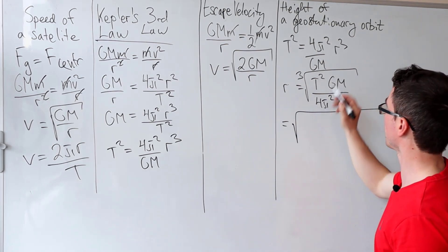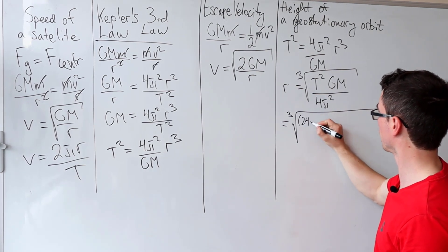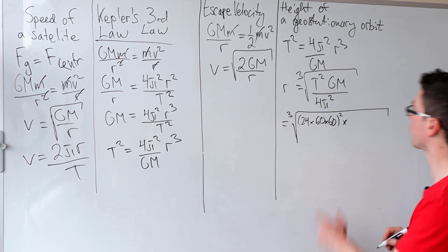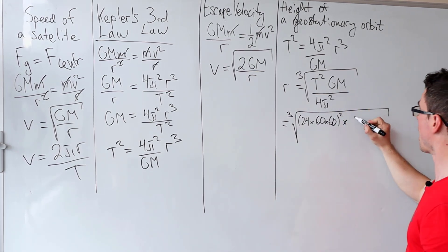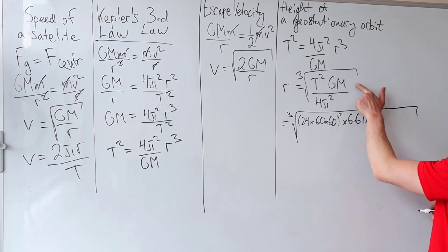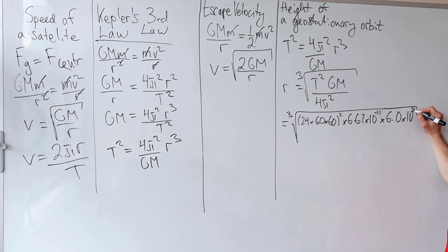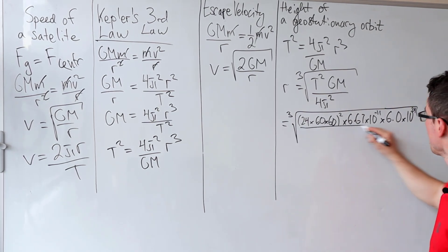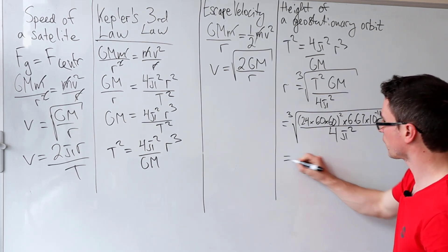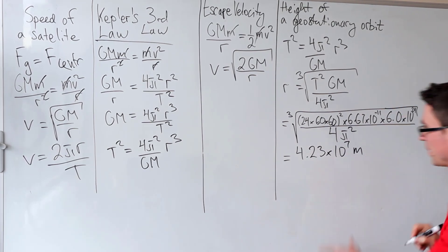Those numbers will typically be given in the question. So this will be the cube root of t² - it's going to be 24 hours times 60 minutes times 60 seconds squared multiplied by the gravitational constant, which is 6.67×10⁻¹¹ multiplied by the mass of the earth. If memory serves me right, let's call that around 6.0×10²⁴ kilograms. Divide that by 4π². And if we put this into a calculator, we're going to get around 4.23×10⁷ meters.